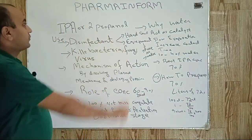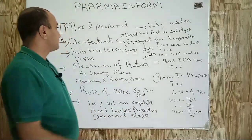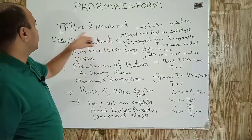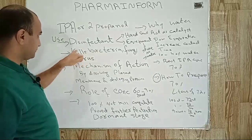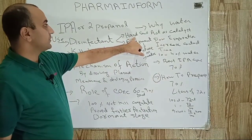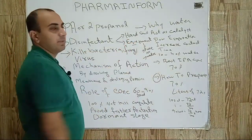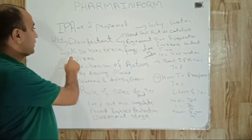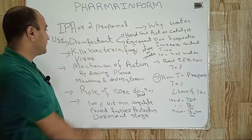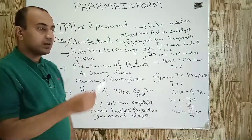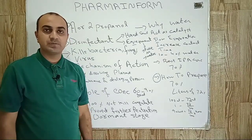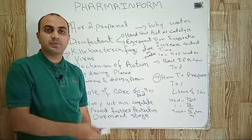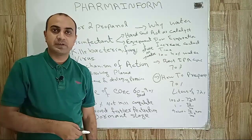As discussed, IPA is also known as isopropyl alcohol or 2-propanol. It is used as a disinfectant in the preparation of hand sanitizers and for equipment cleaning. It kills bacteria, fungi, and viruses. Now, what is the mechanism of action of isopropyl alcohol — how does a 70% or 80% IPA solution kill microbes?